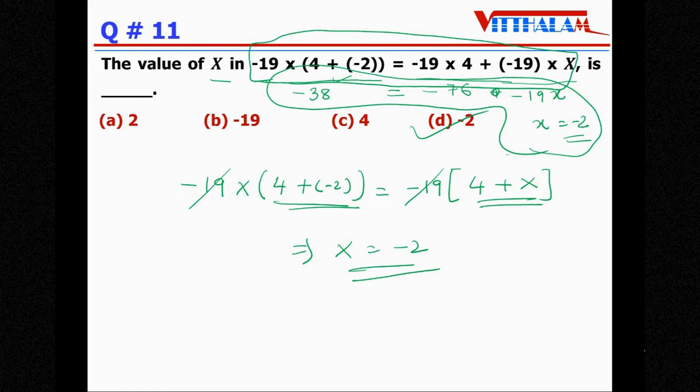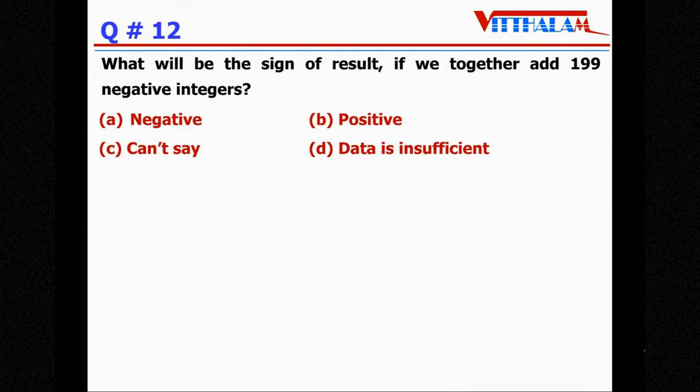Next, what will be the sign of result if we together add 199 negative integers? So it's additions and all 199 negative integers, whether it's 2 or 200 or 300 or any odd or even numbers, whenever we add negative integers the answer will always be negative.